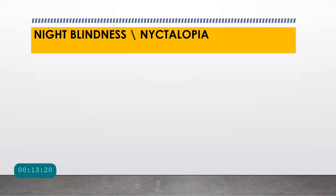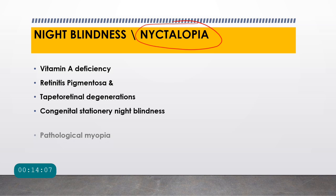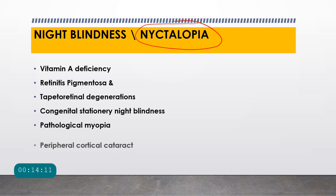Asking whether diminution of vision occurs during day or night helps narrow differentials. Night blindness (nyctalopia) is caused by vitamin A deficiency, retinitis pigmentosa, chorioretinal degenerations, congenital stationary night blindness (non-progressive), pathological myopia, and peripheral cortical cataract. In peripheral cortical cataract, the central lens is clear; at night, the pupil dilates, exposing the peripheral cataractous lens, causing vision problems.